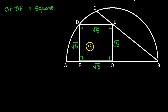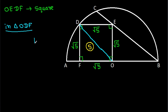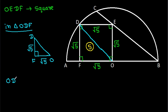If we join OD, then in triangle ODF: OF is root 5, DF is root 5, and the angle at F is 90 degrees. So by Pythagoras, OD squared will be OF squared plus DF squared.